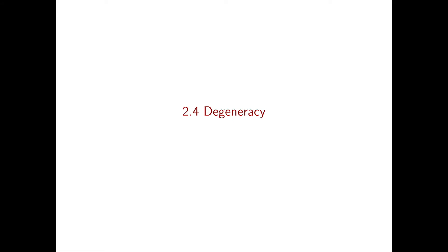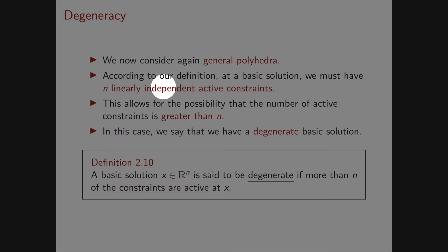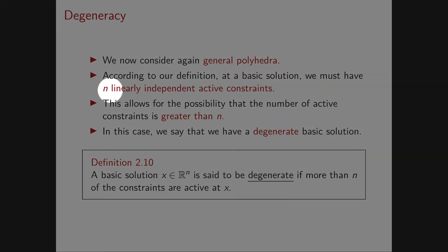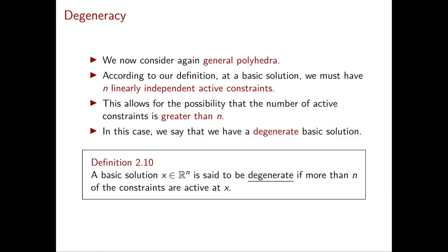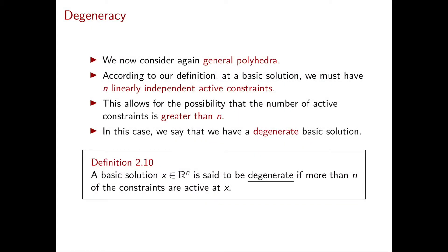In this video we're going to introduce and discuss the concept of degeneracy for basic solutions. First we're going to define this concept for general form polyhedra and then we're going to specialize it to standard form polyhedra. In a basic solution we have n linearly independent active constraints. While we can't have more than n linearly independent active constraints since our space is R^n, it still can happen that the number of active constraints is greater than n, and this is exactly the case that we call degenerate.